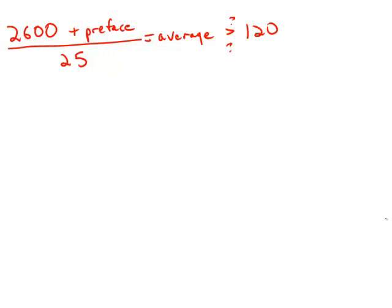One thing that I notice is that if we multiply 120 times 25, we get 3,000. Or another way to say that is that 3,000 divided by 25 equals 120.